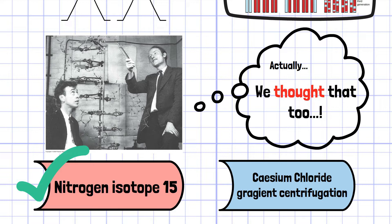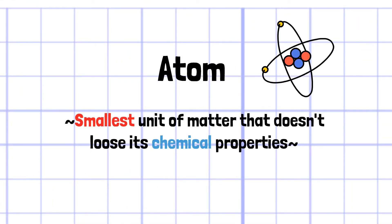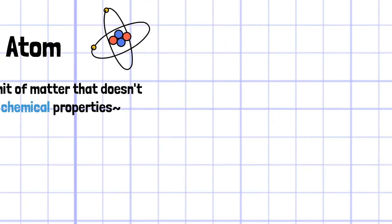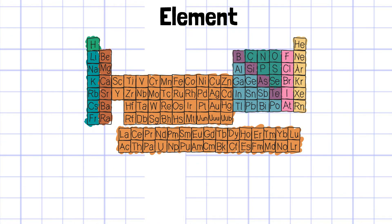In order to understand what Nitrogen 15 is, you need fundamental knowledge about atoms and elements. Atoms are the smallest unit of matter that doesn't lose its chemical properties, and there are approximately 100 types on the planet. Elements are the types of atom, by the way, so their meaning is pretty close, but not precisely the same.